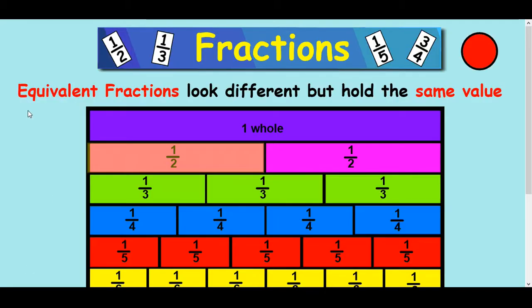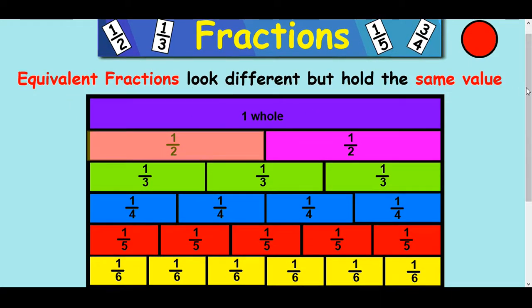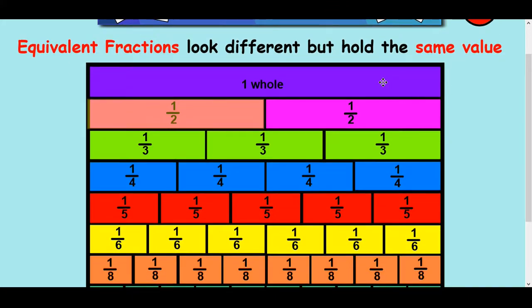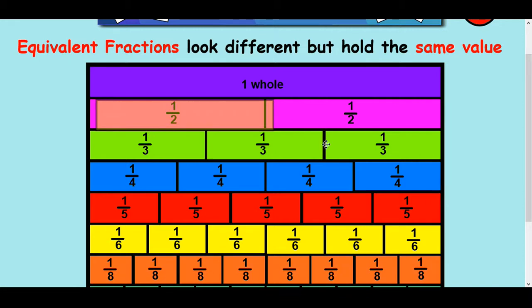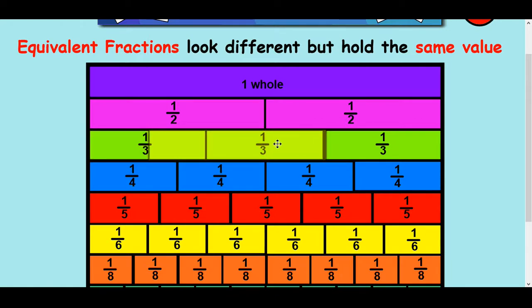Now if we have a quick look at an equivalent fractions table here, you may have seen this in primary school before — it's quite a common kind of fractions table. What we see here is that equivalent fractions look different but they hold the same value. I've got one whole at the top, and you can see it's been split into two halves, then three-thirds, four-quarters, five-fifths, and so on. If I look more closely at the half, you can see that the half is exactly the same size as two-quarters — so two-quarters is an equivalent fraction to a half. Two-thirds would not be, because two-thirds goes further; it's not the same size.